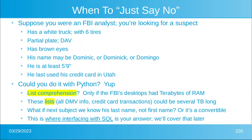So when to just say no. Well, let's suppose that you're an FBI analyst and you're looking for a suspect and this suspect has a white pickup truck that has six tires. They gave you a partial plate number. The only thing you know is that it says DAV. The owner has brown eyes. His name may be Dominic or Dominic with a K or maybe Domingo. He's at least 5'9". He last used his credit card in Utah. Could you do it with Python? Yep, you could. You could do it with Python. Could you do this using list comprehension? Well, you could theoretically, but since each of those lists, like for example, credit card usage in the state of Utah or every registered license plate could be literally terabytes, you would need terabytes of RAM in your FBI computer. So that would be a difficult thing.